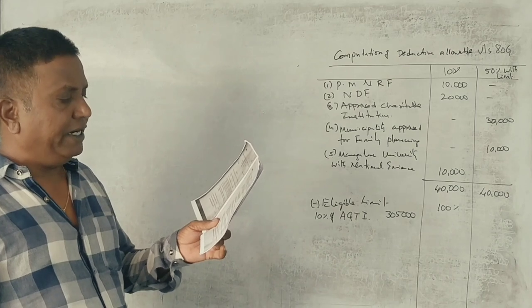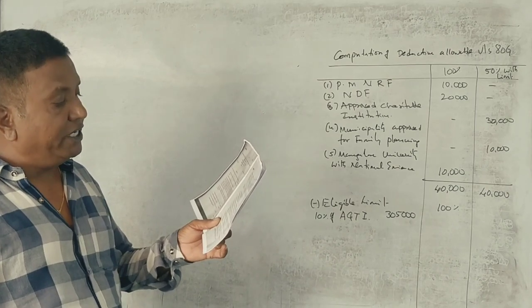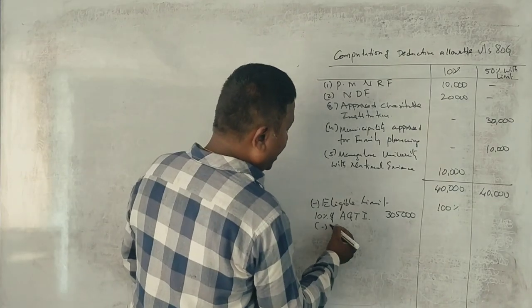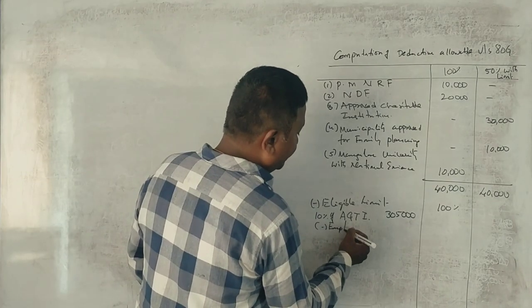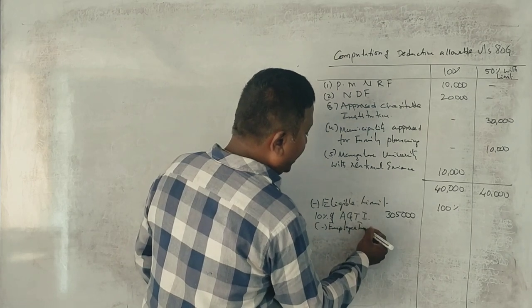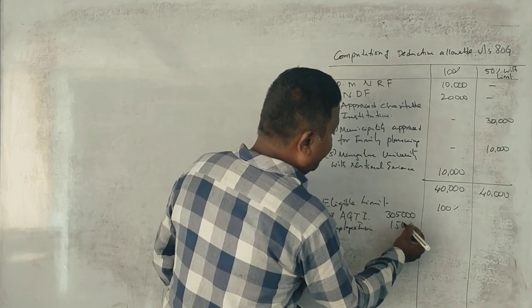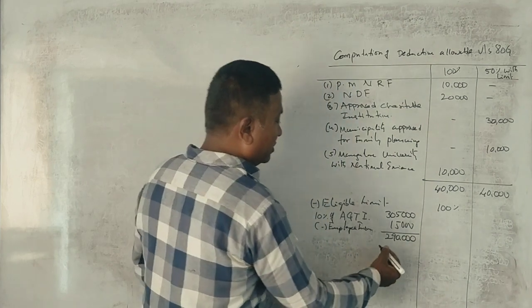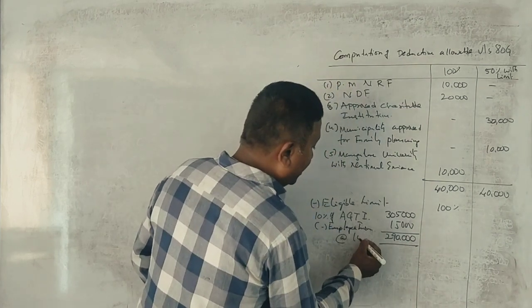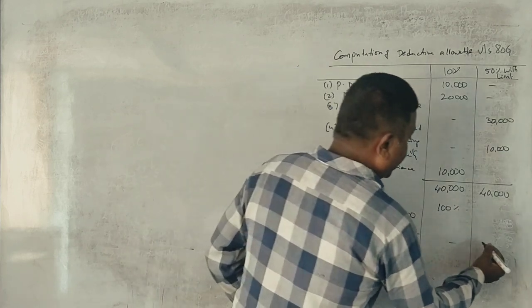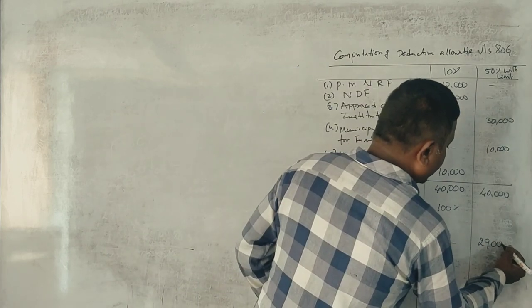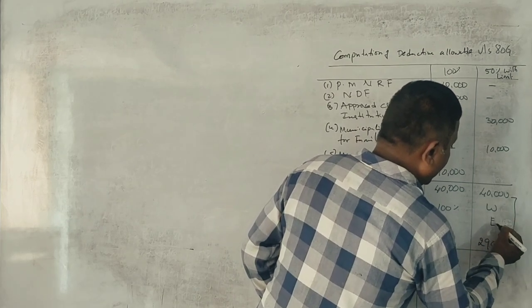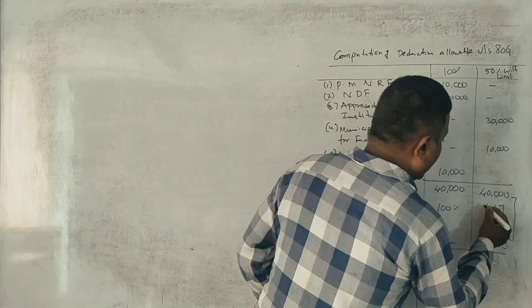And the company has incurred an expenditure of 15,000 on general insurance of company's employees. Employee insurance, 15,000, so employee insurance. In this case, 2,90,000. 10%, that's 29,000.